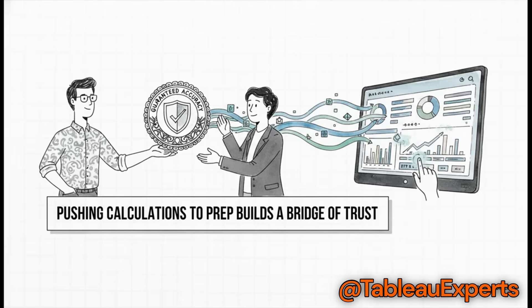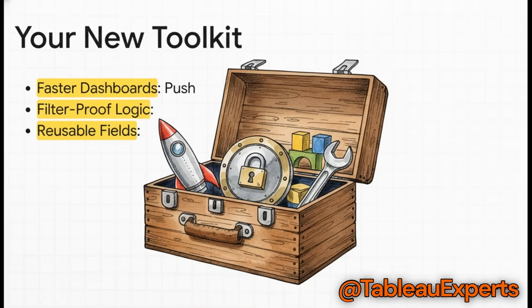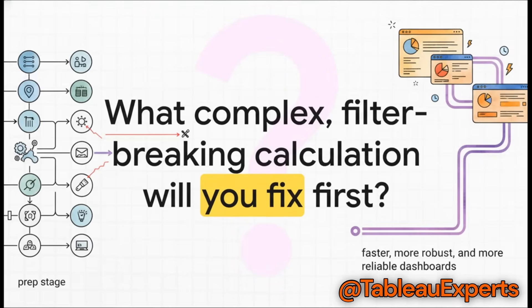Ultimately, what this all comes down to is trust. By pushing the calculation into the data prep stage, you're building a bridge of trust with your users. You're giving them the freedom to explore and ask questions of the data while guaranteeing that the core metrics they rely on are accurate, stable, and completely reliable. Think of this less as just a feature and more like a whole new strategy for your toolkit: build faster dashboards by pushing heavy lifting to the prep stage, deliver filter-proof logic that your users can actually trust, and treat these calculations as reusable assets you can build once and let your entire organization use everywhere. So, the only real question left is — what filter-breaking calculation are you going to go fix?